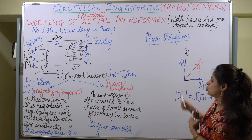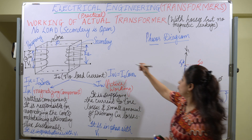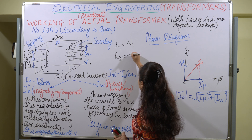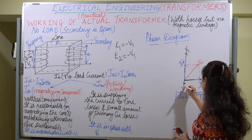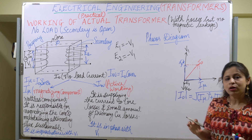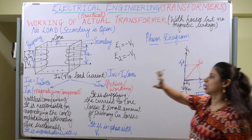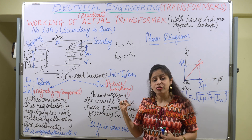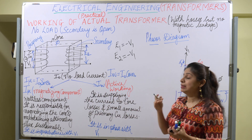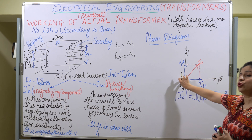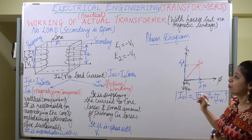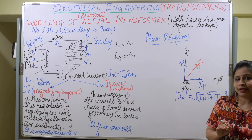E1 and E2 are also shown in the phasor diagram. By Lenz's law, E1 is equal to minus V1. E2 is also opposite to V1. The magnitude of E2 is greater than E1 because the secondary has more turns than the primary — this is a step-up transformer. This completes the phasor diagram for the practical transformer on no load with losses but no magnetic leakage.